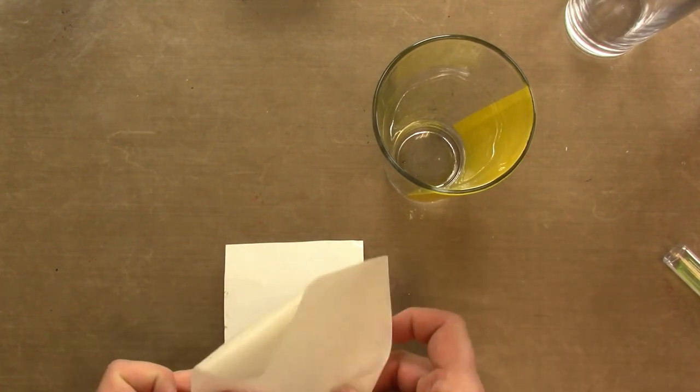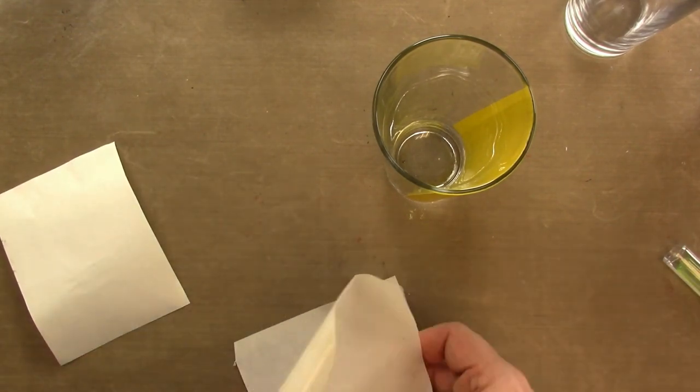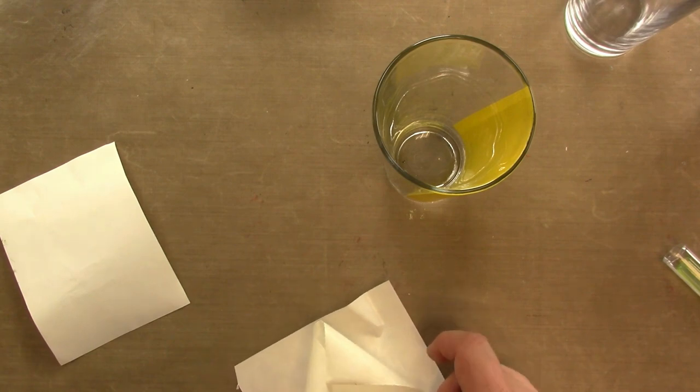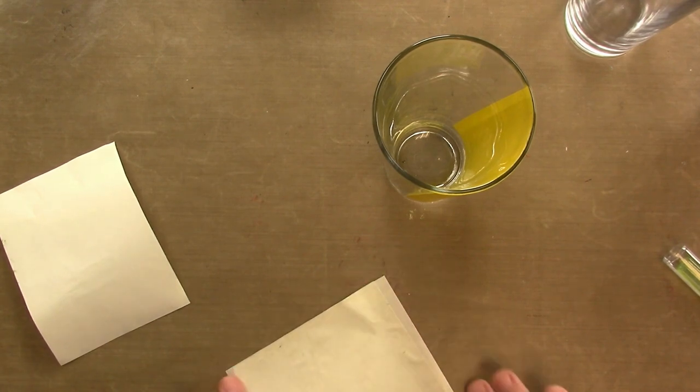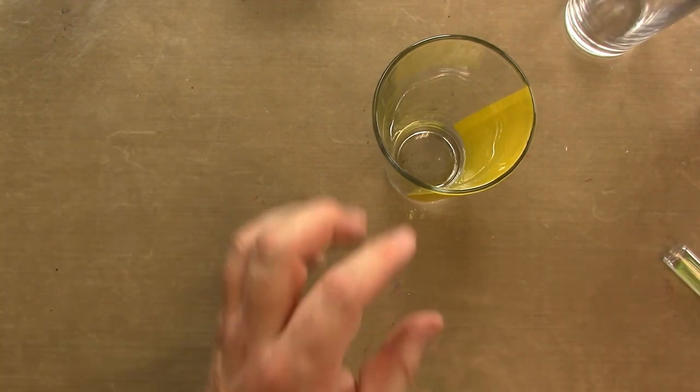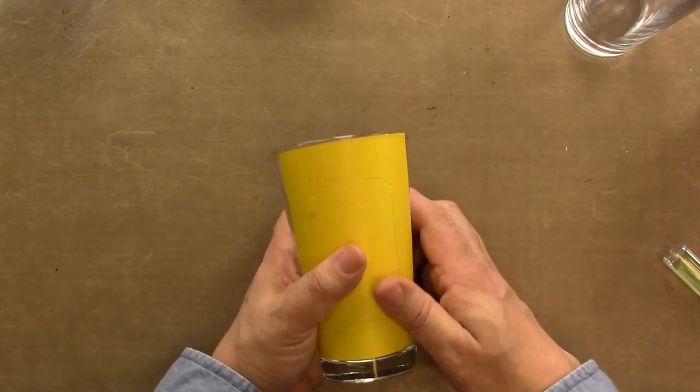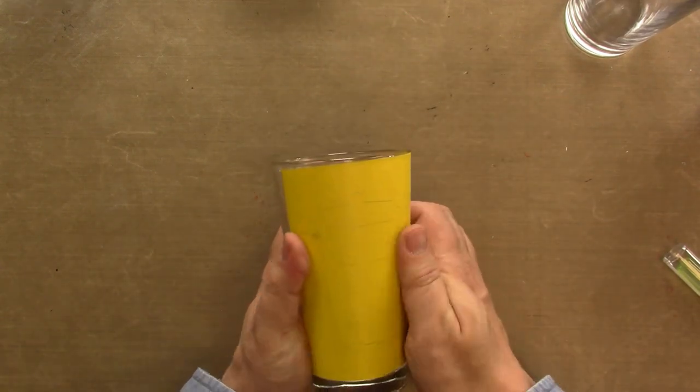Now I can slowly take away the transfer sheet. You can see all my stencil is nicely adhered to my glass. Remember these transfer sheets we can reuse, so I'm going to go ahead and put it right back onto a carrier sheet. I have a whole collection of these at different sizes that I just reuse over and over again. I'm going to make sure this is really burnished down well.